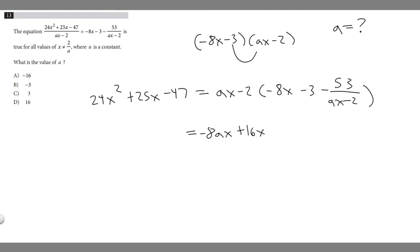And then minus 3 times ax is minus 3ax. And then minus 3 times minus 2 is going to be plus 6.